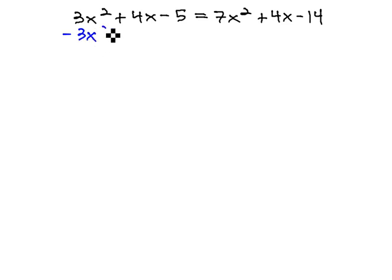So we'll subtract 3x squared from both sides, line up our like terms as we do this. We'll subtract the 4x from both sides, and we'll add 5 to both sides.